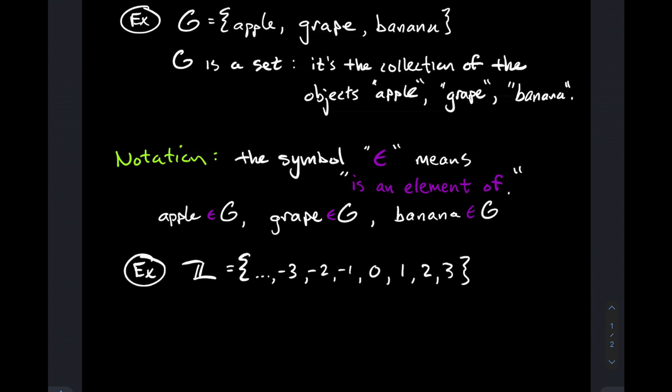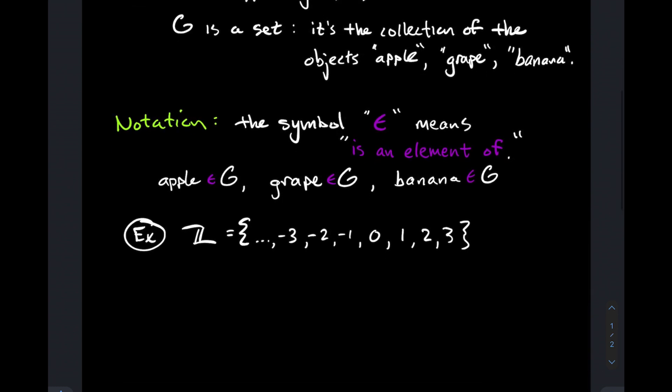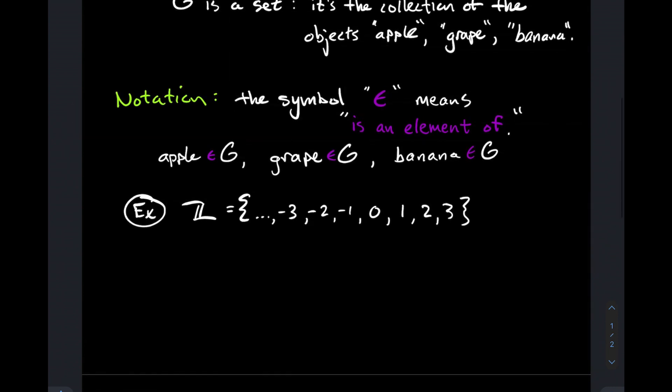Let's look at another example. Here I've got this boldface Z, and I have listed out the positive and negative whole numbers and zero. I should have ellipses after the 3 to indicate the pattern continues. This might not be new to you. These are called the integers, and I'm going to think about this collection of numbers as the set of integers.